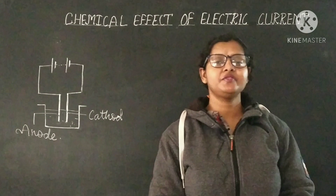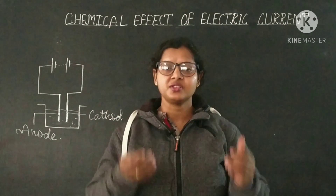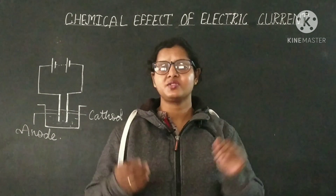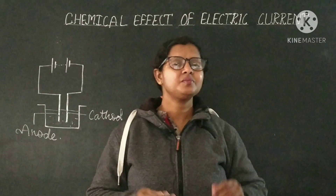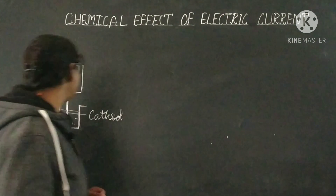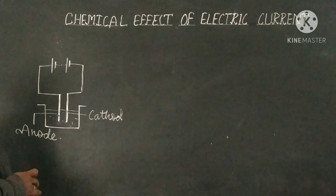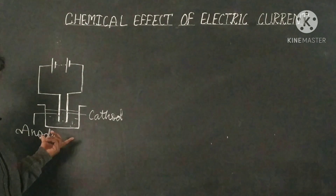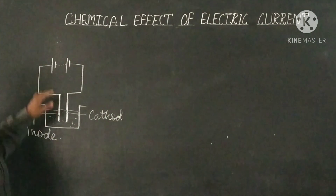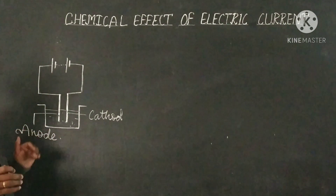We will now observe what happens during the passing of electric current through the conducting solution and how bubbles of gas form on the cathode and anode. The great scientist William Nicholson discovered this. Whenever electric current is passed through acidified water — acidified because we added lemon juice — we arrange the setup with a battery and connecting wires, with two electrodes immersed into the acidified water.